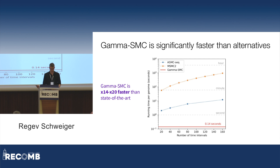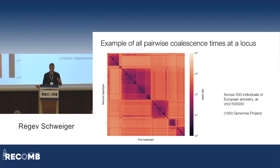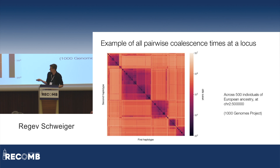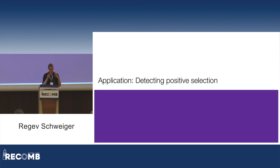Gamma SMC is much faster than alternatives. The state of the art is the ASMC method, which runs in seconds per genome. Our method runs in about 0.1 seconds per genome — really fast. It's also quite accurate: slightly less accurate than alternatives but in the same ballpark, so still very useful for inference. The output you get is for 500 individuals of European ancestry from the 1000 Genomes Project — at one position in the genome, these are the coalescence times inferred between each pair. You get a nice matrix, and there's a lot of information in that.